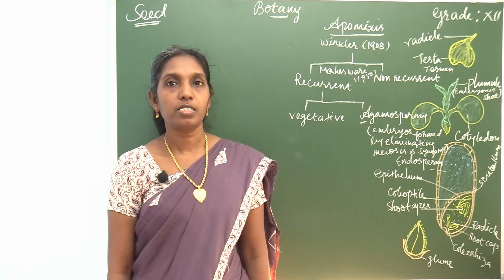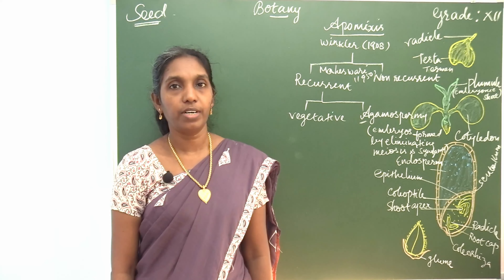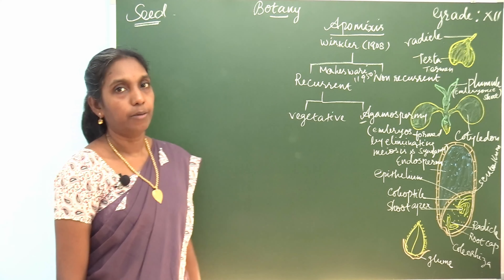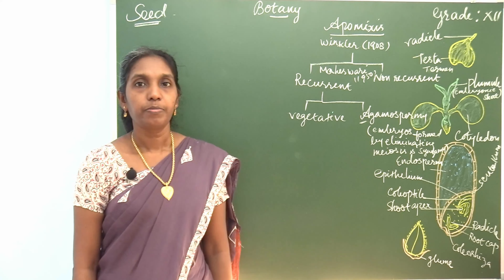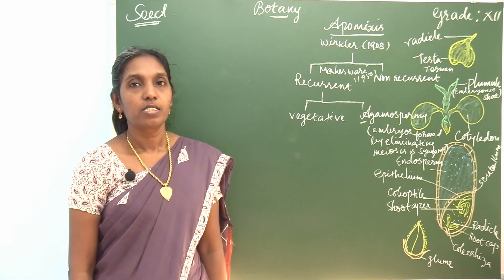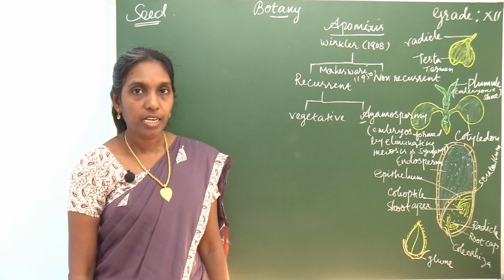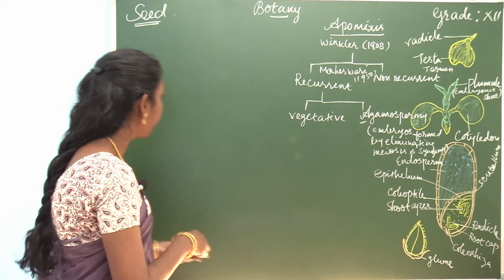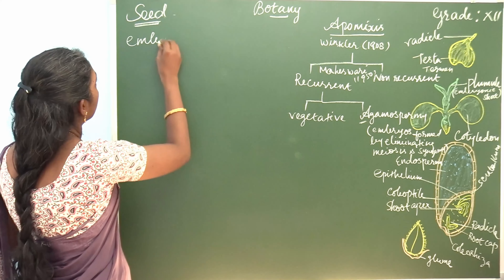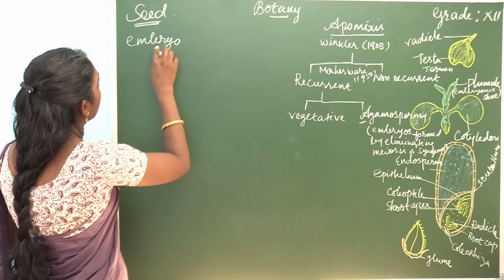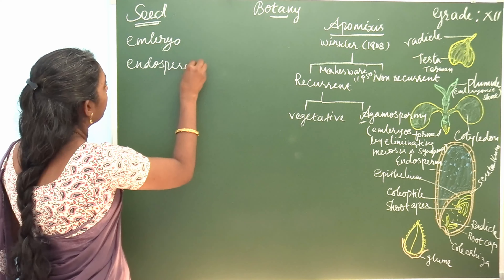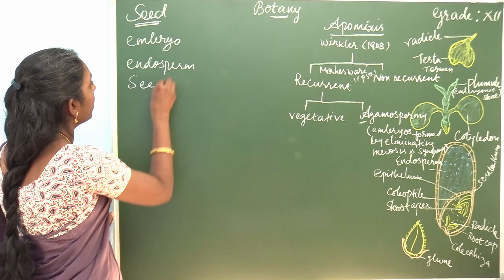In the previous class we discussed in detail about post fertilization changes. Today let's discuss seed. Seed is the fertilized ovule which consists of embryo, endosperm and seed coat.